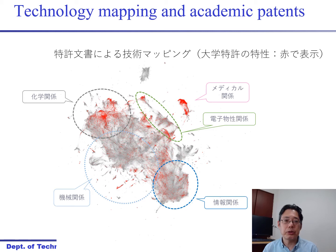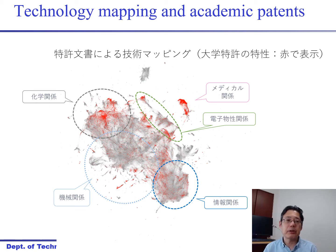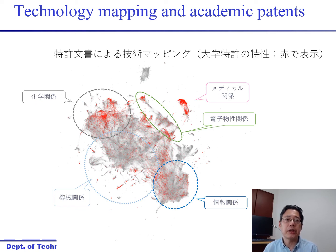Not only that, but we also distinguish gray patents, which are owned by firms, and red patents, which are owned by universities — academic patents. We can analyze how these two things are interrelated to each other based on that information.